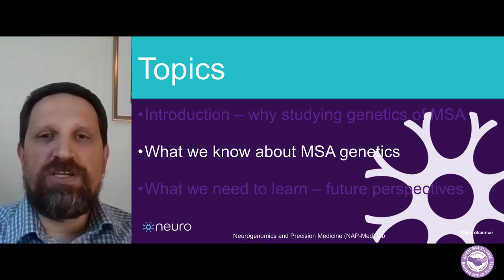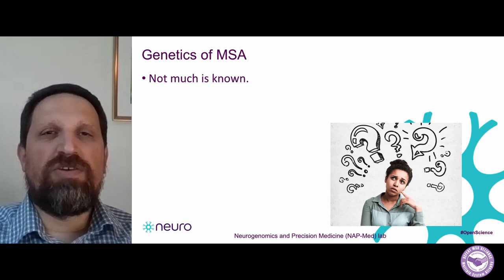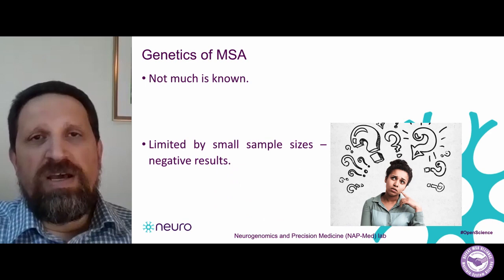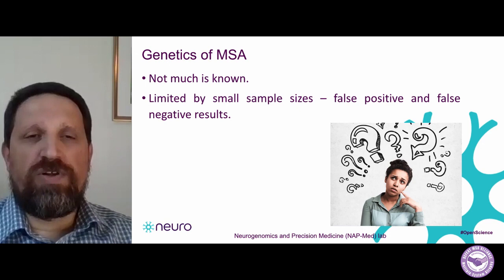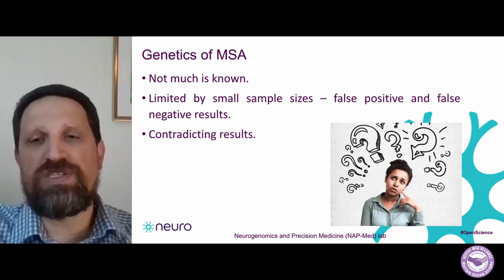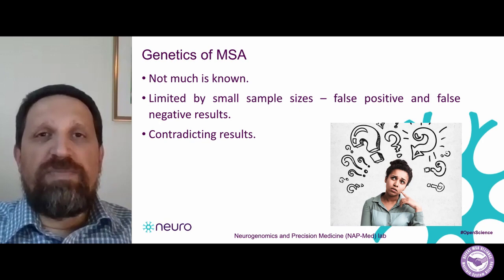So let's talk about what we know in MSA genetics. Not much is known — we have to be honest. There have been studies, but overall we don't have a clear picture of how genetics affect the risk of MSA and how it affects progression. This is mainly because most studies done so far are based on relatively small sample sizes, which can create both false negative or false positive results — false associations or false lack of associations — and because of that, we often get contradicting results.